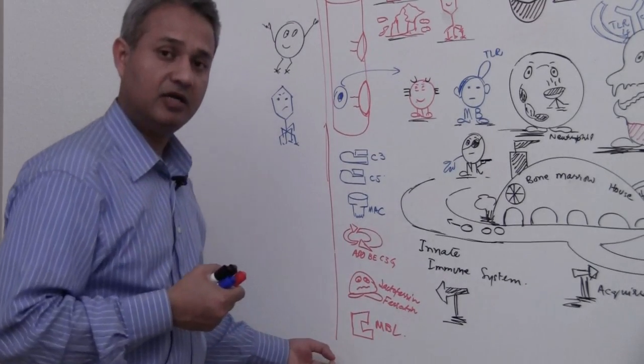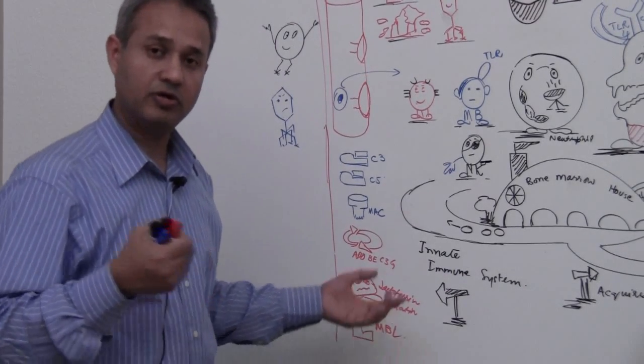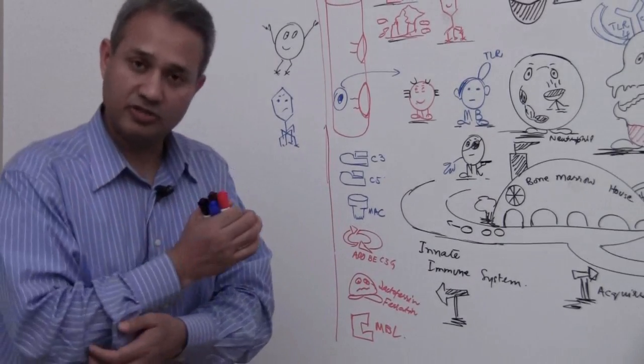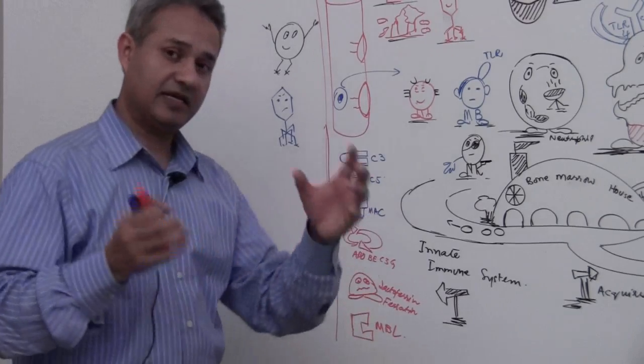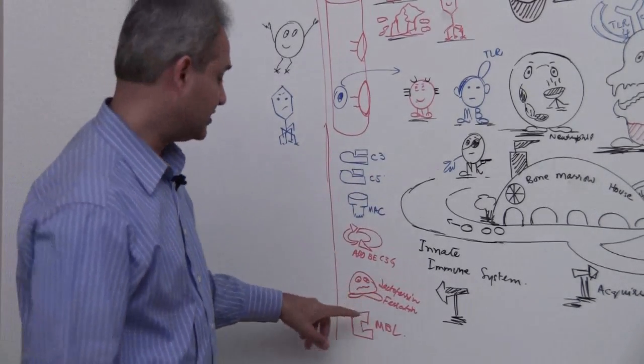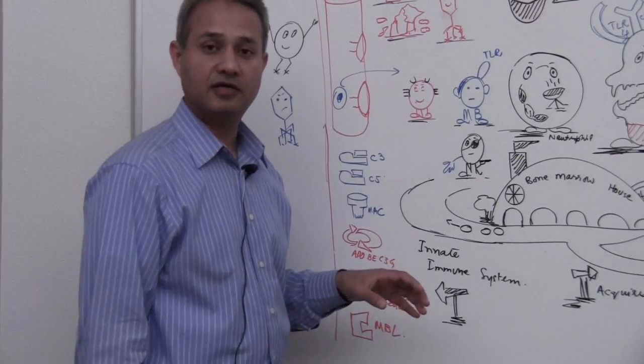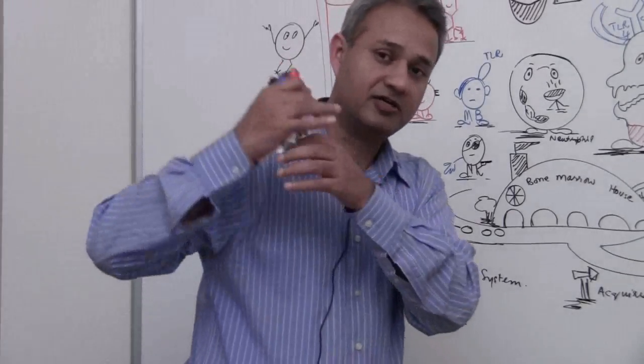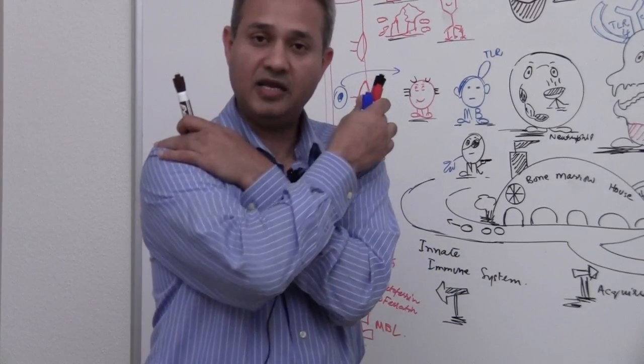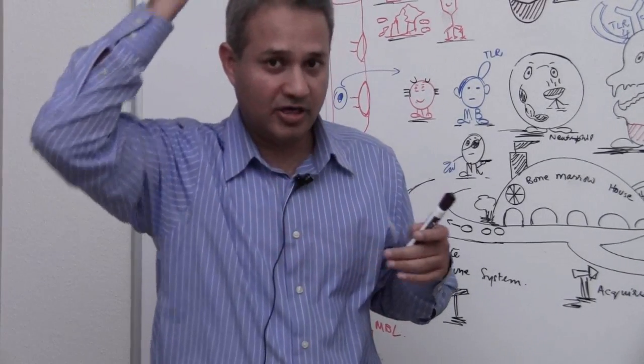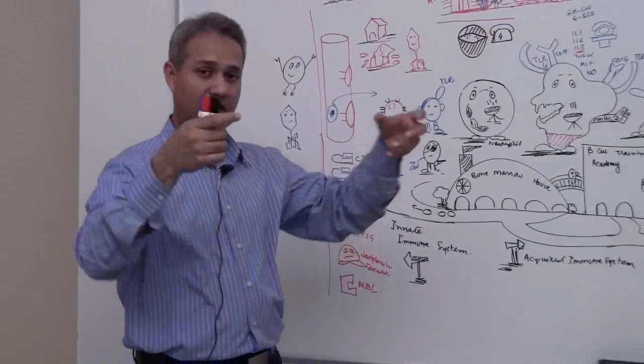Then there is mannose-binding lectin. There is a thing called mannose which is a sugar which is only found in the pathogens, bacteria. And this MBL can attach to the sugar. So what is this? This is also a flag. The criminal came in and the flag got attached. So here came C3B, here came MBL, this was an antibody. All those things are markers, they are flags.